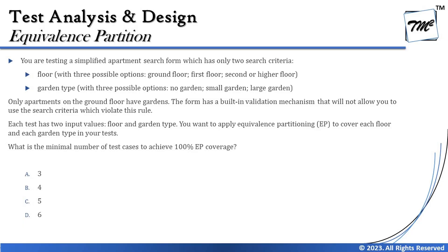Let's complete the question. We have floor with three options — ground, first floor, and second or higher — and garden type also has three possibilities: no garden, small garden, and large garden. There are also constraints given: only apartments on the ground floor have a garden, which is logical since upper floors don't have gardens.